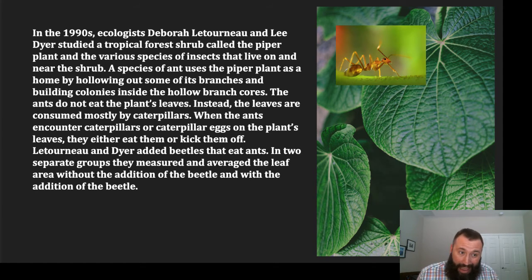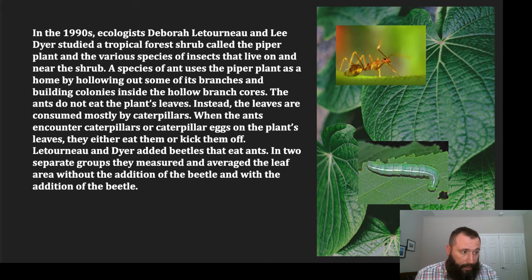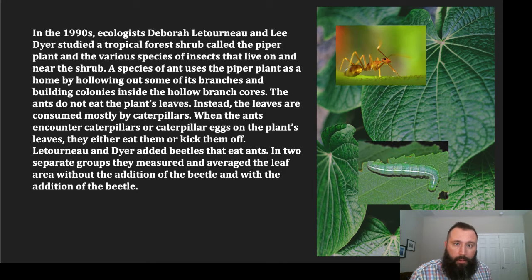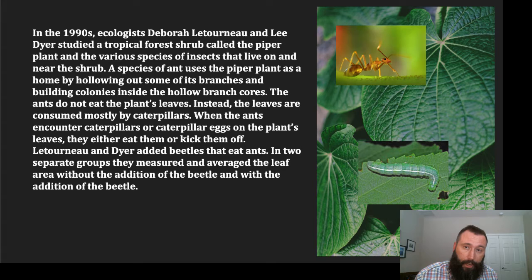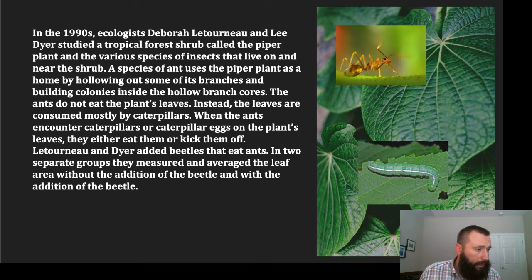Caterpillars are also part of this community and are feeding directly off of the piper plants — they're the primary consumer in this case. When the ants encounter caterpillars or caterpillar eggs on the plant's leaves, they either eat them or kick them off. Kind of like what the otter is doing in the other example — the otter is keeping the urchin population in check. The ant is also keeping the population of caterpillars in check, directly decreasing the caterpillar population.